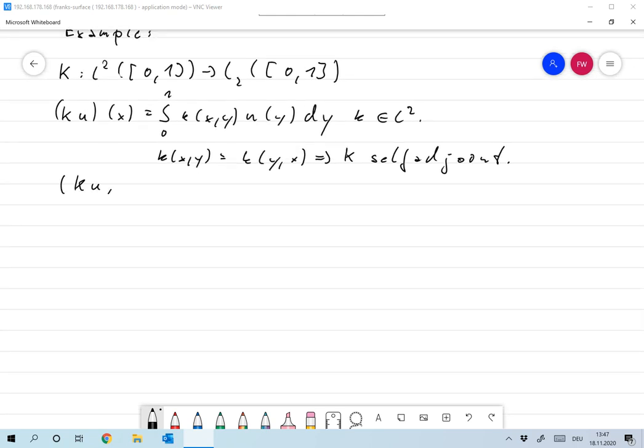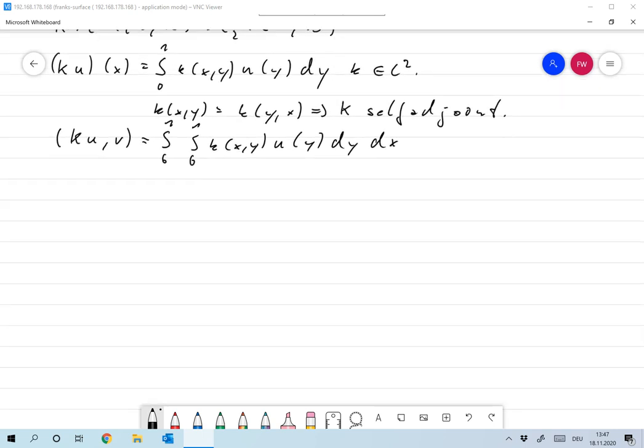So (Ku, v) is the same as the integral from 0 to 1, integral 0 to 1, k(x,y) u(y) dy dx, and interchanging the order of integration, this is the same as the integral of 0 to 1, integral 0 to 1, excuse me, v(x) dx.